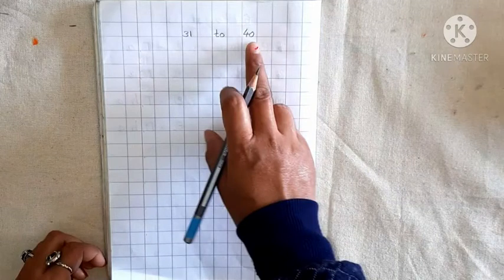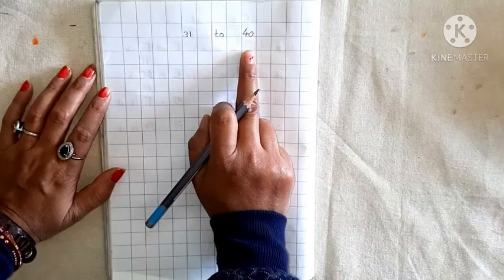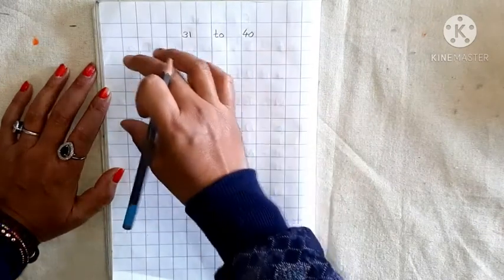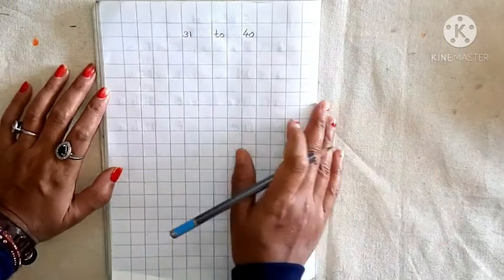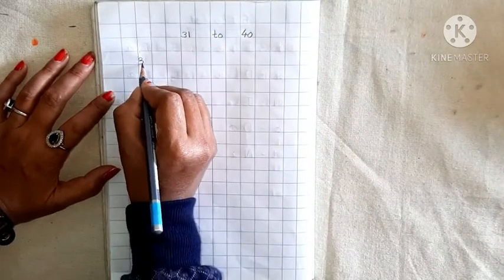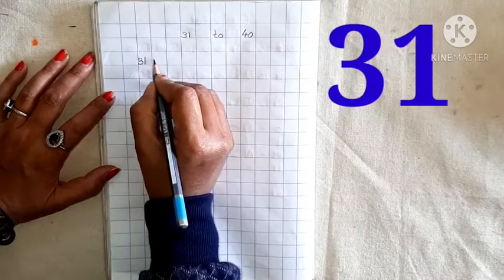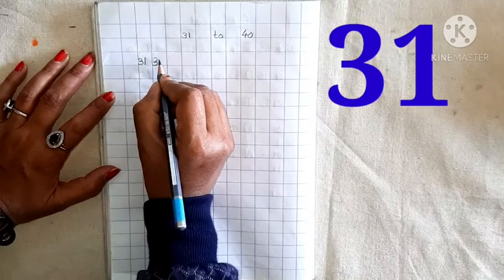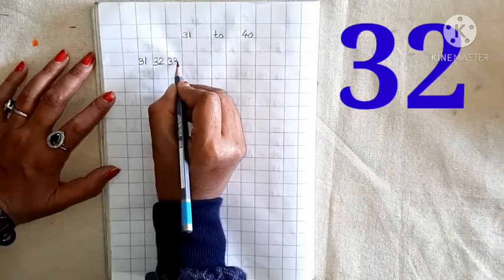Now, open your math notebook and write numbers 31 to 40. Which numbers? 31 to 40. Then write with me. Okay, but how do you write? Horizontal way. Okay? Horizontal way में आपको आज write करना है. Then write here. 3, 1, 31. After 31, 3, 2, 32. After 32, 33.